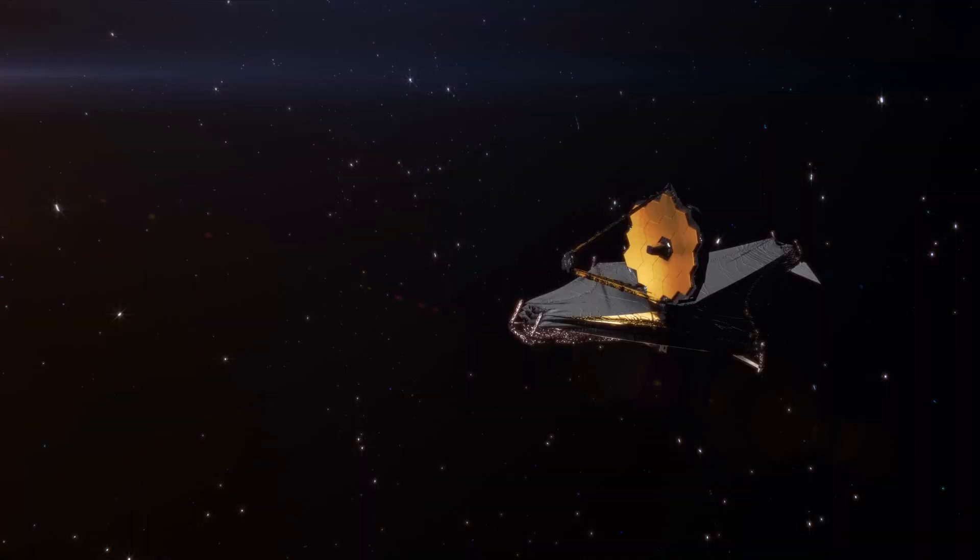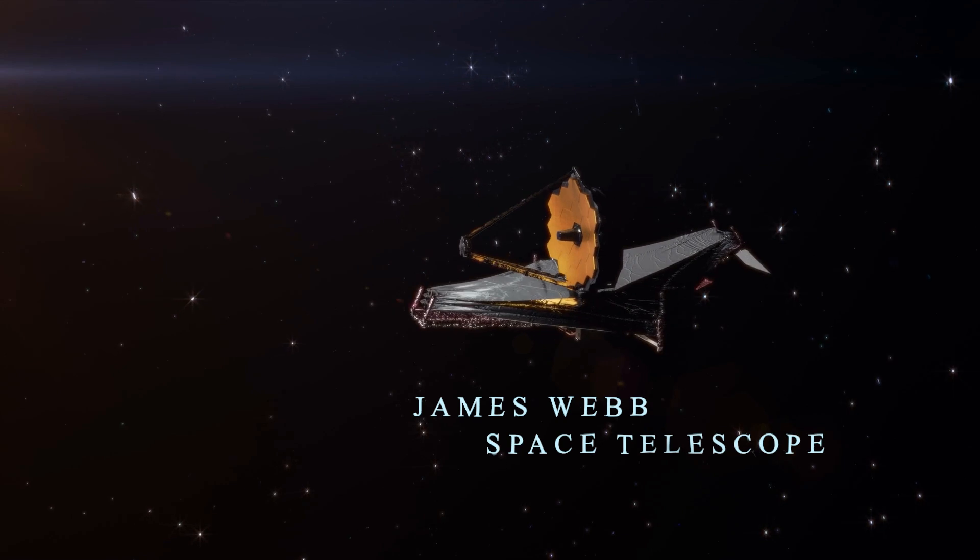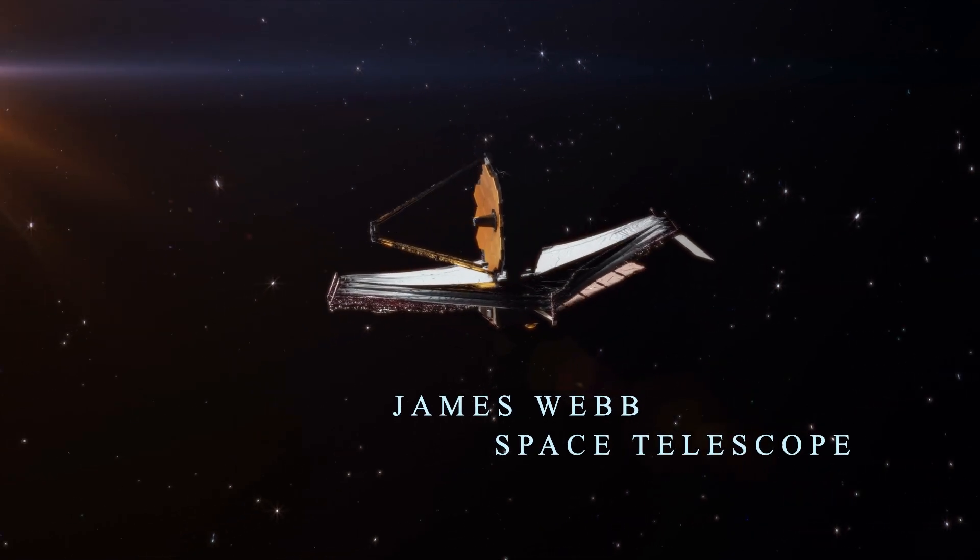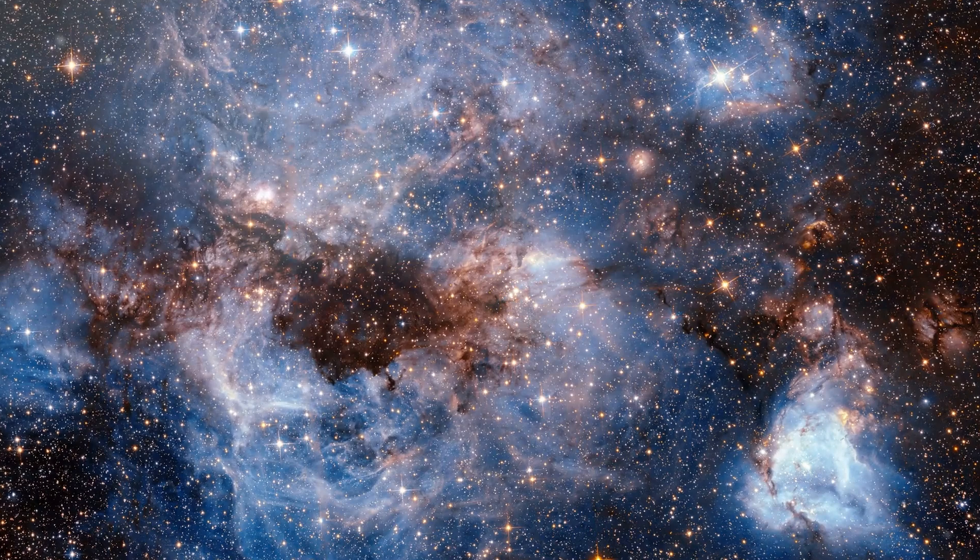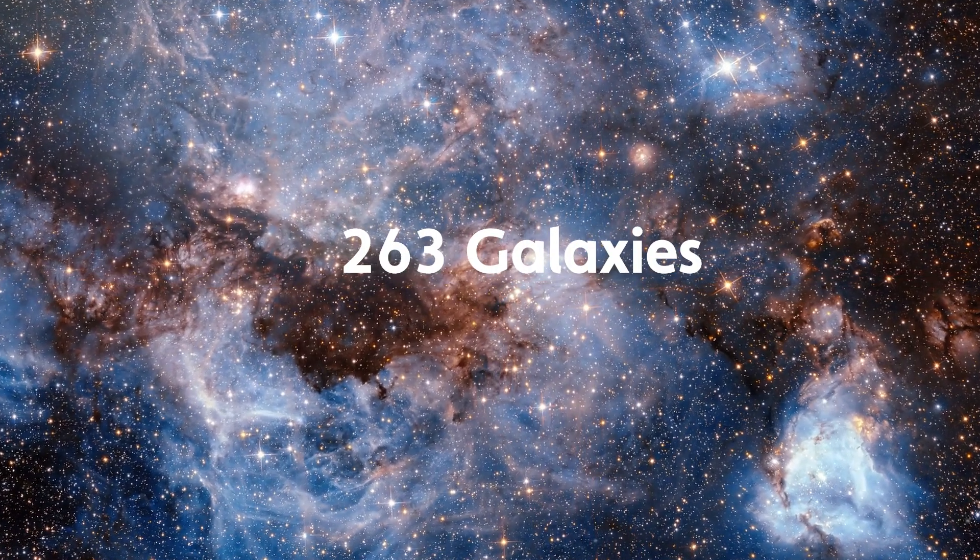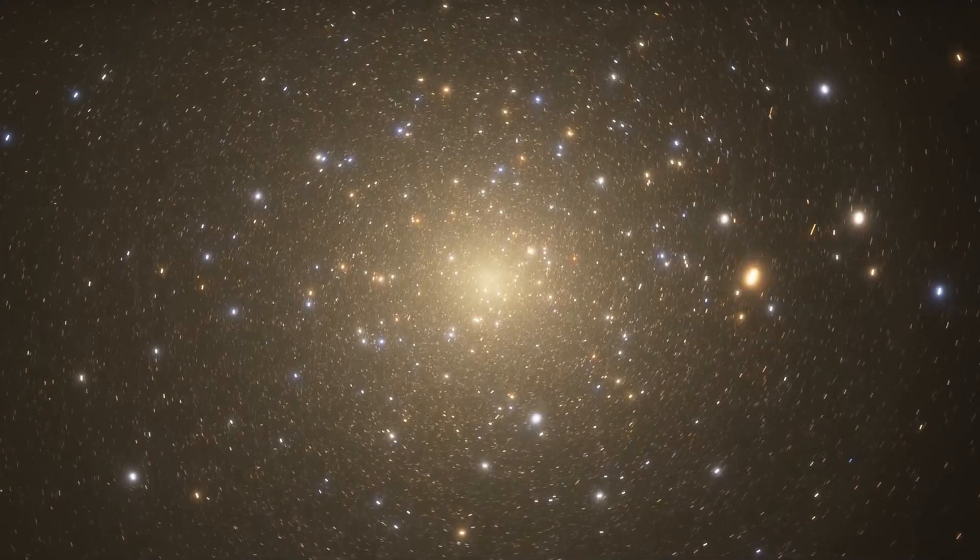To understand why this is such a big deal, we need to look at what JWST actually saw. The James Webb Space Telescope was designed to peer deep into the early universe, further than any telescope before it. And in one recent study, scientists analyzed 263 ancient galaxies, formed just a few hundred million years after the Big Bang.